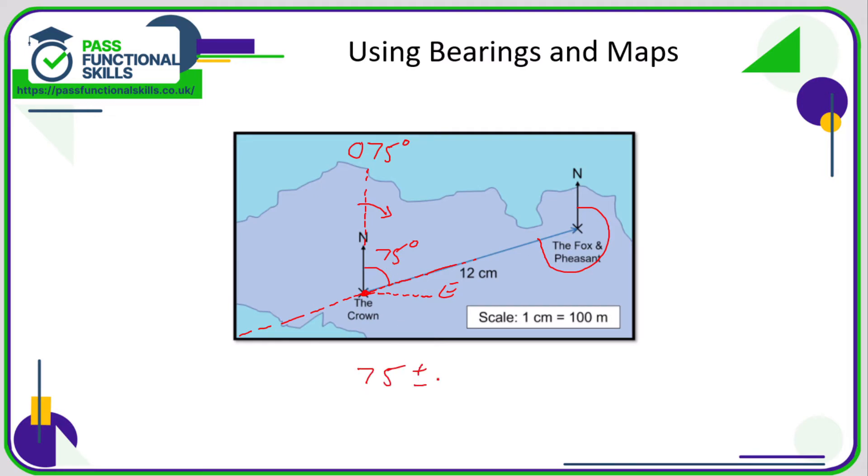In other words, 75 plus or minus 180 degrees. Here I'll definitely add 180 degrees, otherwise I'd have a negative number which would be a bit confusing. And 180 plus 75 is 255 degrees. So the bearing of The Fox and Pheasant from The Crown is 75, but the bearing of The Crown from The Fox and Pheasant is 255.